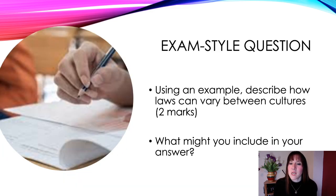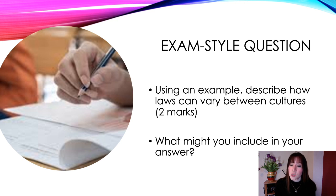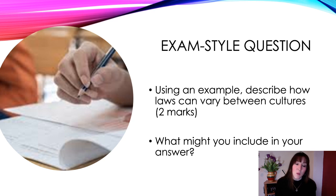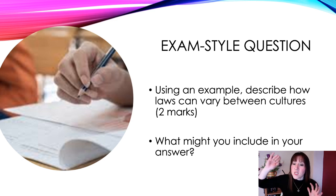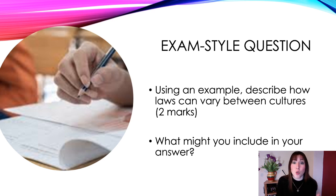I would now like you to have a go at an exam-style question — this one's only worth two marks. Describe how laws can vary between cultures. You can use polygamy or homosexuality as an example, since the homosexuality law is very different over different places. Higher-level answers use varying and different examples, so always use my examples if you're struggling, but for something like this I'm sure you could find your own example quite easily.